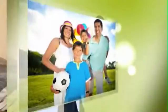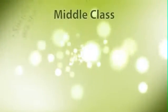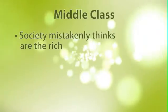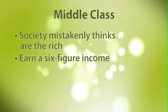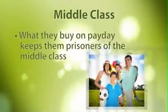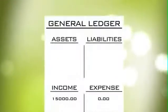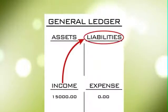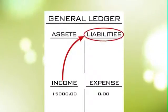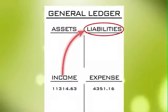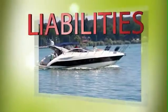Let's continue on and look at the middle class. The middle class is the group that society mistakenly thinks are the rich — they are not. Yes, they typically earn a six-figure income, but what they buy on payday keeps them prisoners of the middle class. What they buy on payday are liabilities — things that cost you. By buying liabilities, the money gets pushed up and out their expense column. Liabilities are items like cars, boats, houses, airplanes, credit card debt.